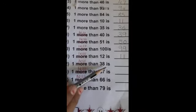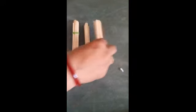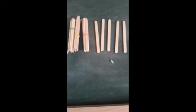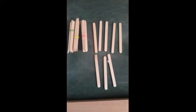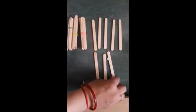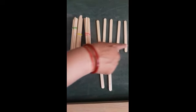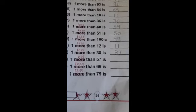Our next number is one less than 38. Let's make 38 — three tens and eight ones. Now one less means we take away one ones stick. So we get three tens and seven ones — which number? 37. So one less than 38 is 37. 38 mein se agar hum 1 less karenge to 37 number milega.